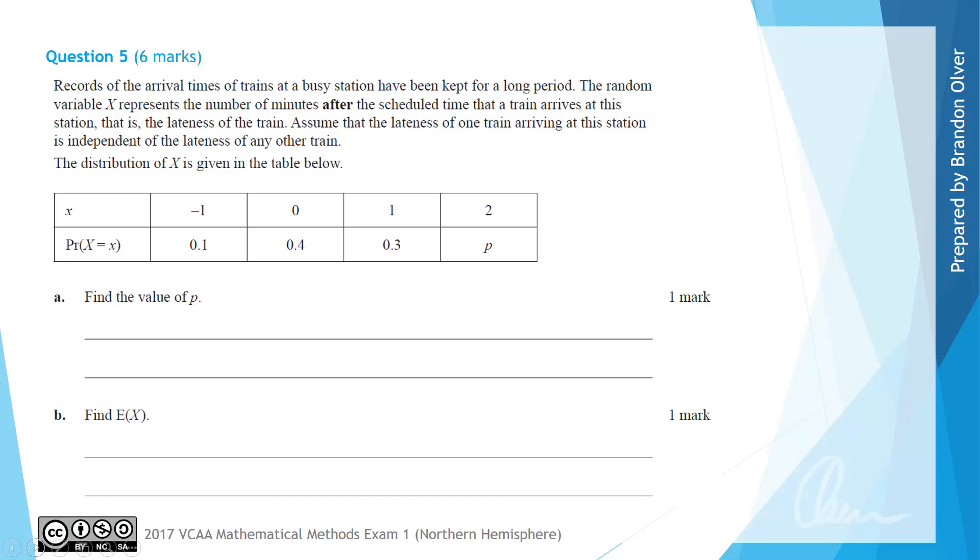That is the lateness of the train. Assume that the lateness of one train arriving at this station is independent of the lateness of any other train. The distribution of X is given in the table below.